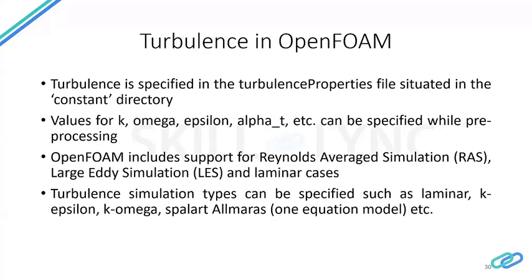OpenFOAM has good libraries for solving turbulence models. Turbulence is specified in the turbulence properties file in the constant directory. Whichever turbulence model you choose — be it k-epsilon, k-omega, and so forth — the relevant values can be specified during pre-processing in the zero folder. OpenFOAM includes support for RAS and LES cases (Reynolds Averaged Simulation and Large Eddy Simulation), as well as laminar cases and turbulent simulation types such as k-epsilon, k-omega, and k-omega SST.